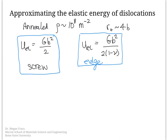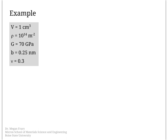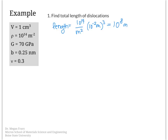Here's our example problem. We have a volume of 1 cubic centimeter of material with a dislocation density of 10¹⁴ per meter squared — a pretty high dislocation density — a shear modulus of 70 GPa, Burgers vector of 0.25 nanometers, and Poisson's ratio of 0.3. The first thing we want is the total length of dislocation line: dislocation density (10¹⁴ m⁻²) times the volume (1 cm³) gives 10⁸ meters of total dislocation line in this small sample.